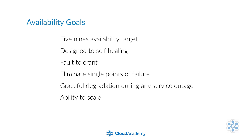Our high availability design goal for this project is to achieve five nines of availability — that is roughly five and a half minutes of downtime per year — considered the gold standard of high availability for applications. In order to hit our five nines goal, we need to design a self-healing architecture, build a fault tolerant infrastructure, eliminate all single points of failure, and provide graceful degradation of services if there are any faults. This can be accomplished with a combination of AWS service offerings.